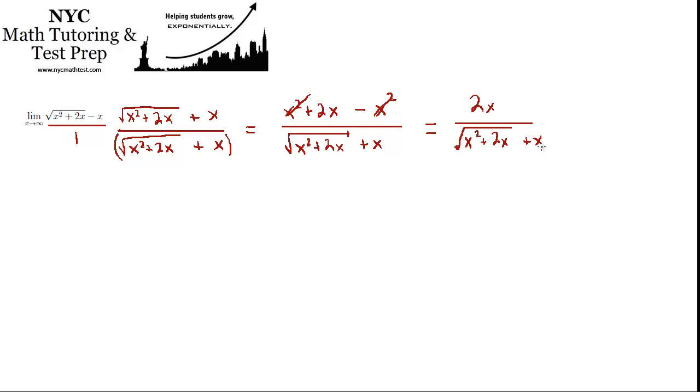Okay, and now we're still sort of in a difficult position because if we were to let x go to infinity now, we would still have infinity over infinity, which would be indeterminate. So another technique that we can use here is we can divide every term in the numerator and the denominator by x.